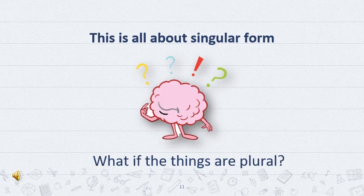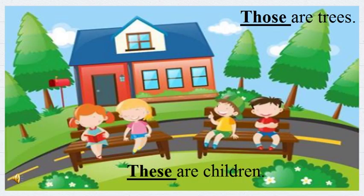Now, this is all about the singular form. Let's talk about what if the things are plural. You can see a fine, clear day. Children are sitting on the bench and the tree houses are there. What if we talk about the children? What if we talk about the nearest places the children are sitting? These are the children.